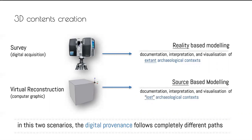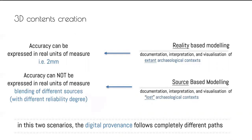In these two scenarios, the digital provenance is very different. In the case of reality-based modeling, accuracy can be expressed in real units of measure — for instance, 2mm of accuracy using a laser scanner. In the case of source-based modeling, accuracy cannot be expressed in real units. It is a blending of different sources with different reliability degrees, making it a complex system.